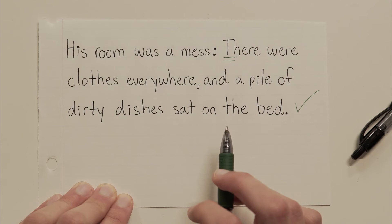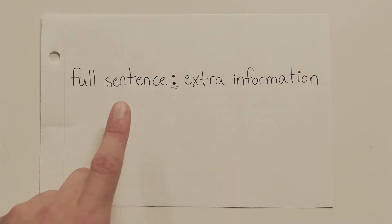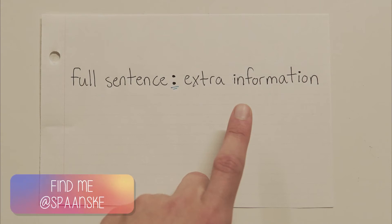And that's it. That's how you use colons. Full sentence first, extra information after. And yes, most of the time, that extra information is going to be a list. But on rare occasions, it will actually be a full sentence. So, let's take a look at some examples and see if the colons are being used correctly.